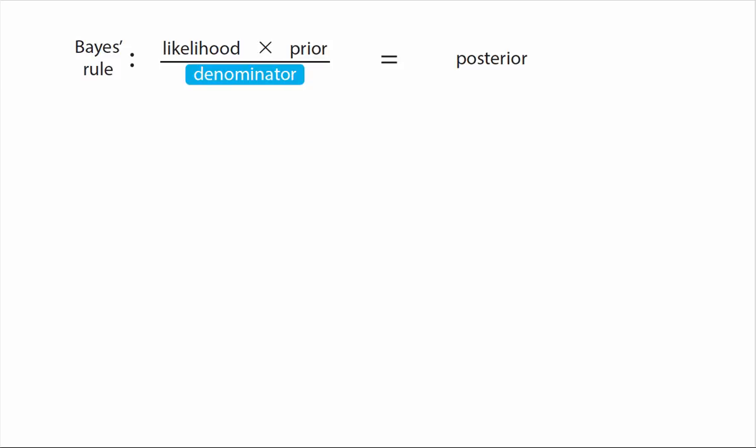In chapter six I look at the denominator term of Bayes' rule, which is actually part of the reason why doing exact Bayesian inference in practice is difficult. That may seem counterintuitive.